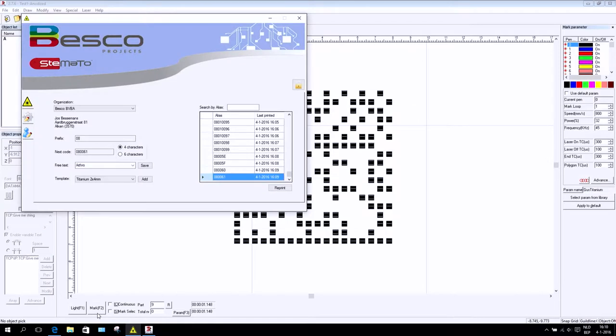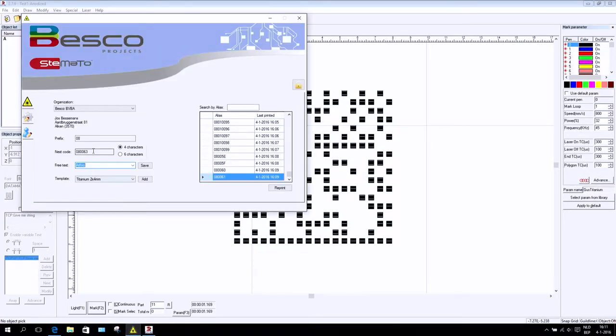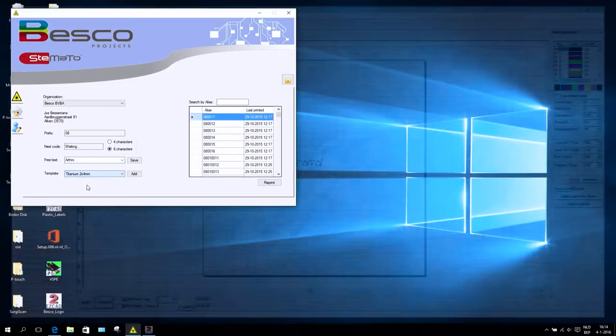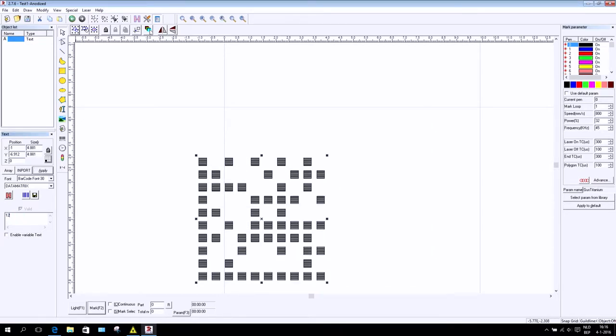The Besko Laser Management Software automatically creates and manages the unique codes and additional text you will use for marking. Your hospital identification, together with a 4 or 6 digit hexadecimal code, allows you to laser all your instruments with data matrix codes ranging from 1x3mm to 4x4mm.